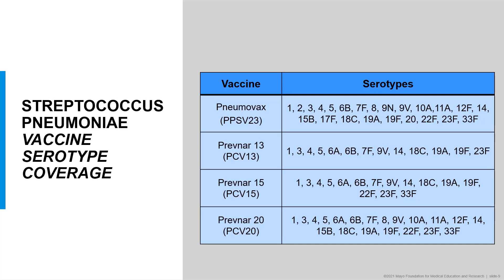Since introduction of routine pneumococcal vaccinations, the incidence of pneumococcal-related diseases has decreased, particularly those associated with serotypes included in the vaccines. However, as vaccines have been effective in preventing disease associated with certain serotypes, other serotypes have emerged as public health concerns. It is for this reason that pneumococcal vaccines will likely continue to evolve in terms of which serotypes are included, both in the conjugate and non-conjugated versions.